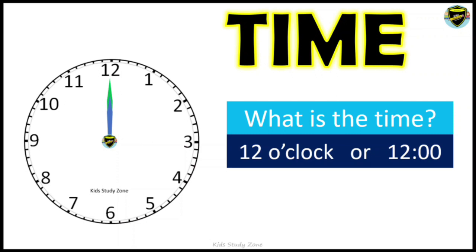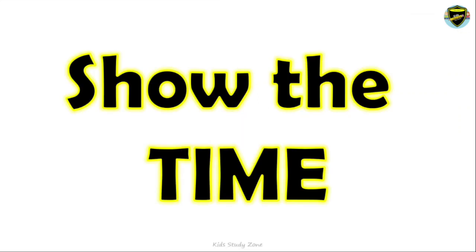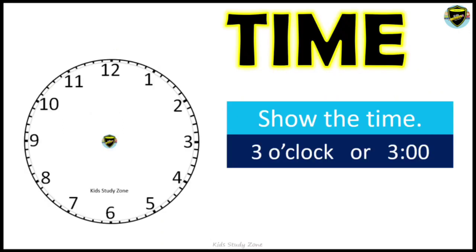Always remember: when showing 12 o'clock, both the hour hand and the minute hand will be one after the other in a line. Don't forget — the minute hand is the longer one and the hour hand is the shorter one. Now in this exercise, you will see the time in the box and need to mark it on the given clock.